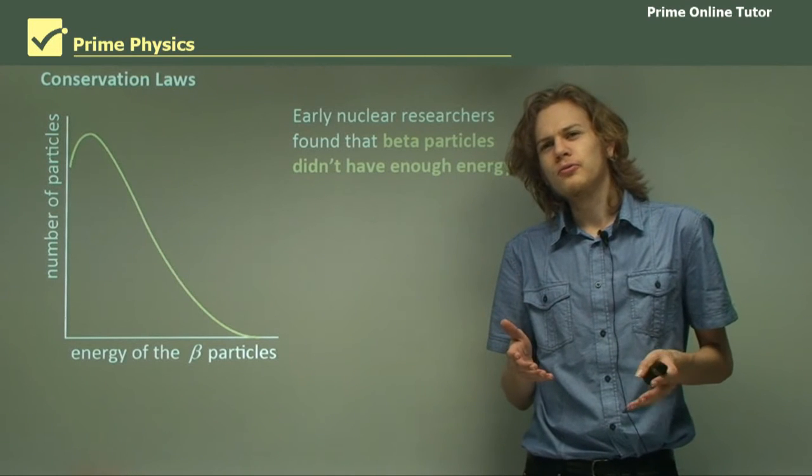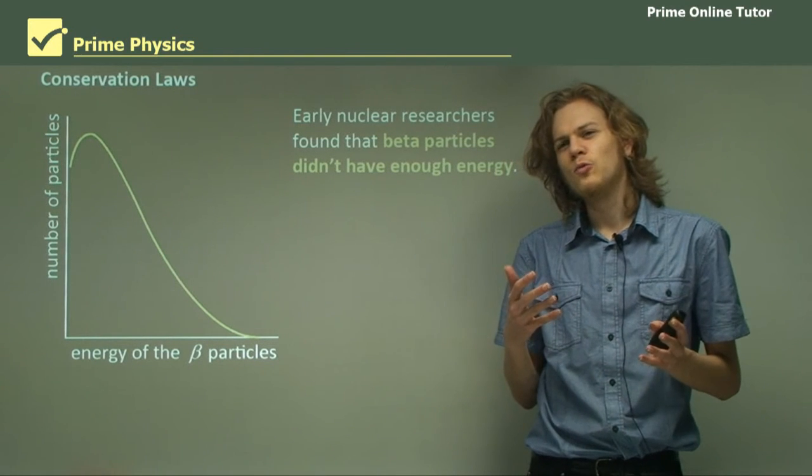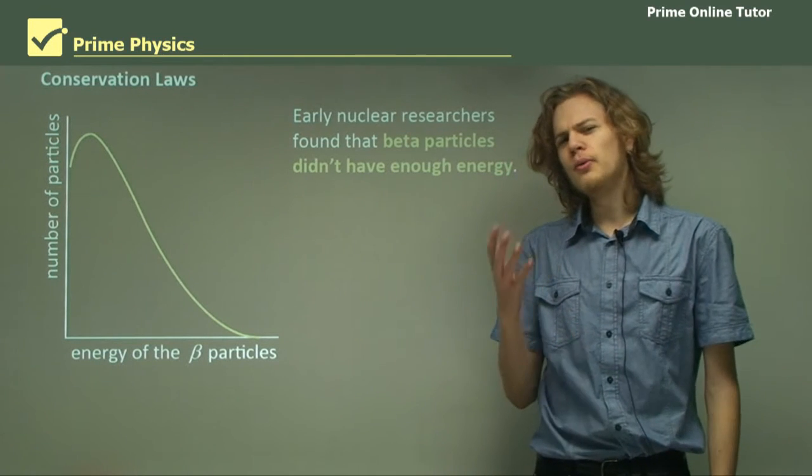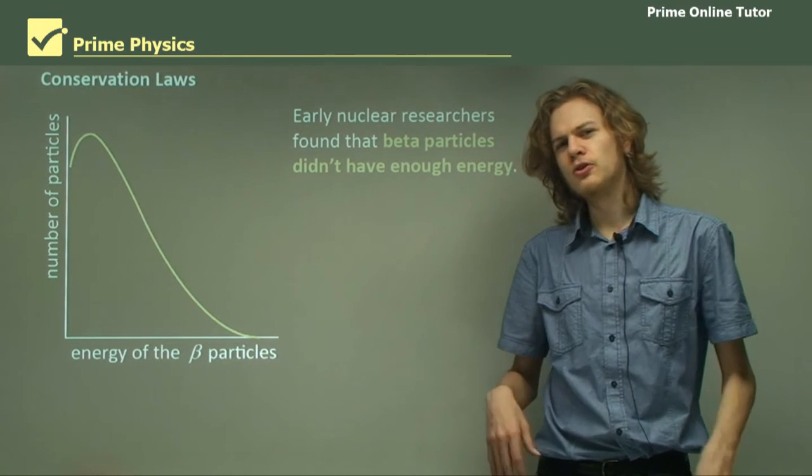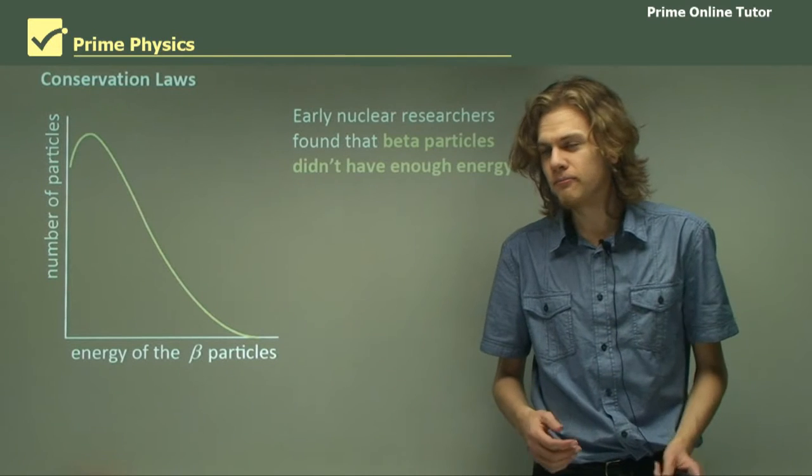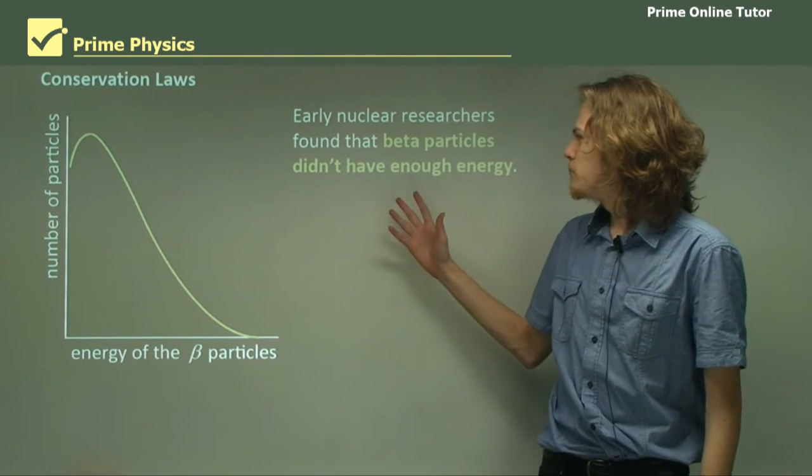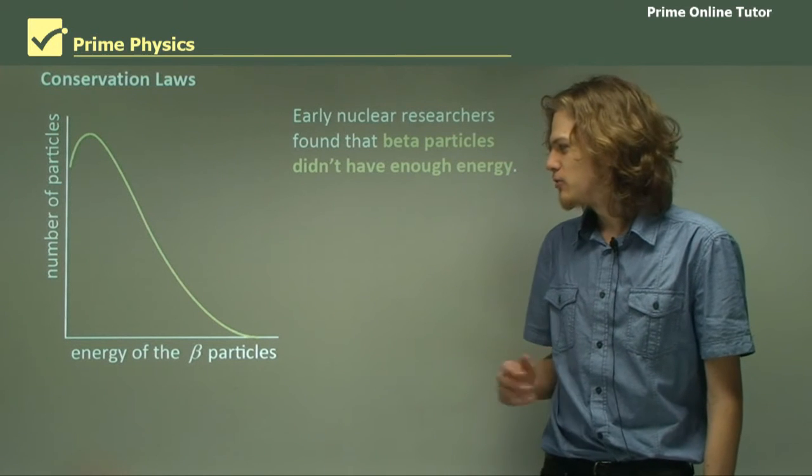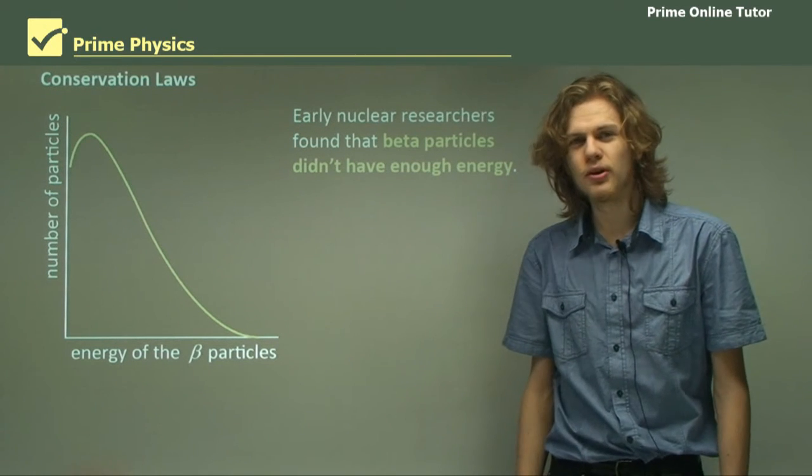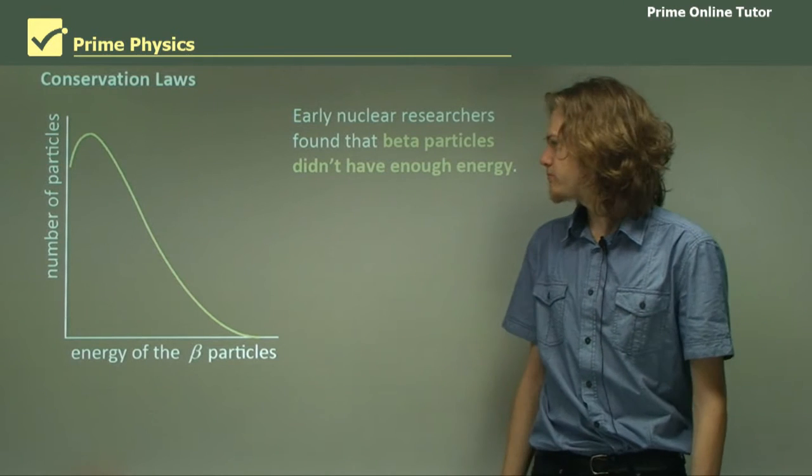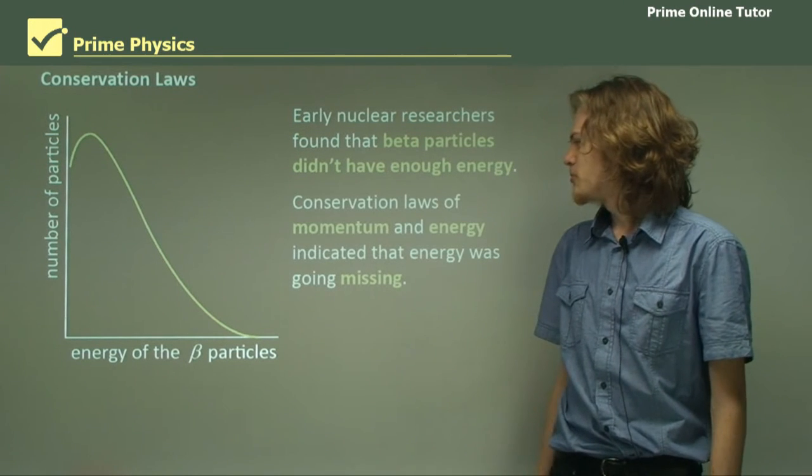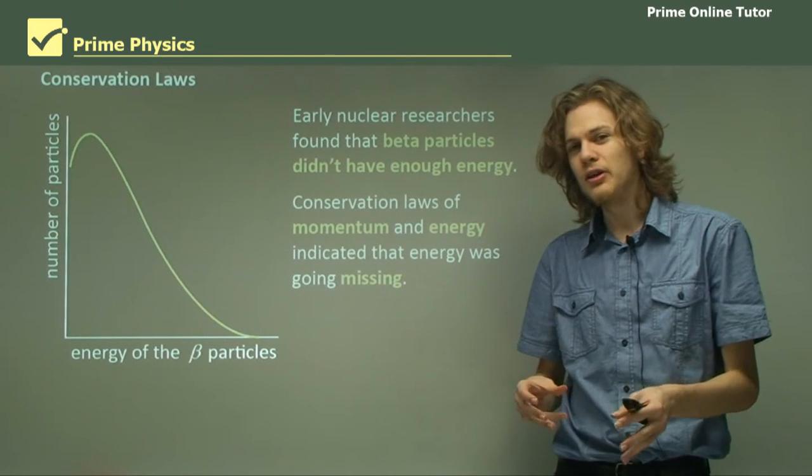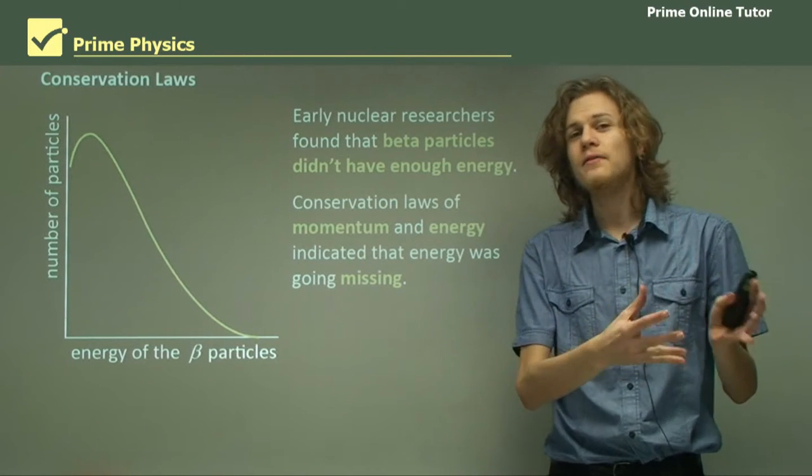First we need to explain why people first predicted the neutrino existed. Do you remember beta decay, the expulsion of an electron from the nucleus of an atom? Well, it turns out beta particles don't have enough energy. We have a graph here of the energy of beta particles emitted during a typical beta decay.